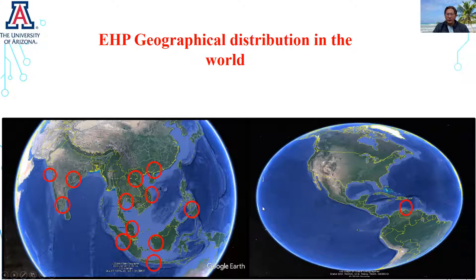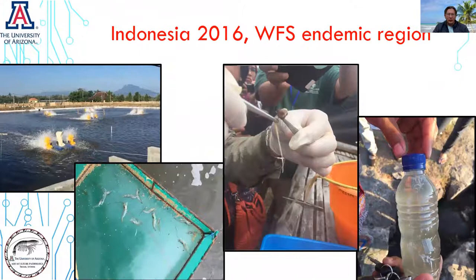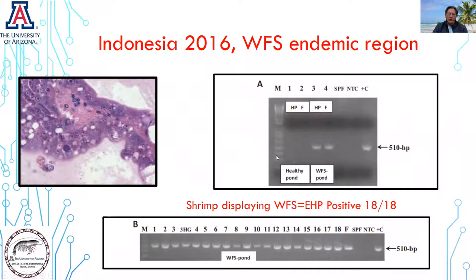The first case scenario is in 2016 in Indonesia. We were having a project under an oil screening project, and we decided to have the first approach to the White Feces Syndrome. We are collecting the whitish GI tract — the gastrointestinal tract of white color — and we took samples of animals for histopathology and PCR. In all animals in which the GI tract was displaying the typical whitish discoloration, we were able to confirm the presence of EHP by histopathology and PCR.